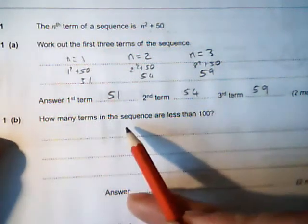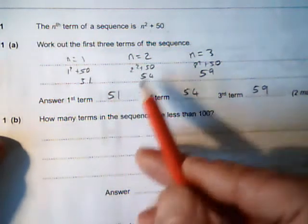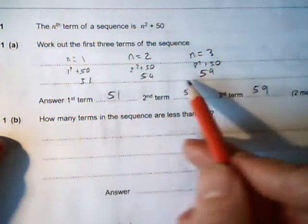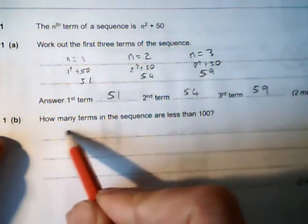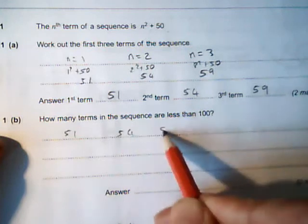How many terms in the sequence are less than 100? You can look at the square numbers, but the first three are 51, 54, 59.